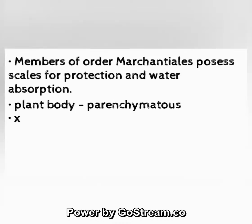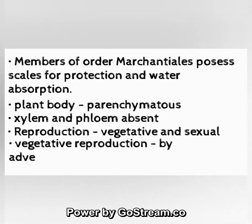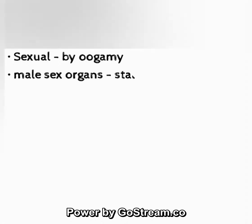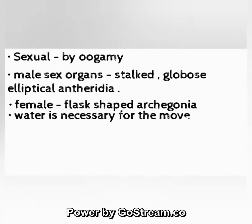Plant body is parenchymatous; xylem and phloem are absent. Reproduction is vegetative and sexual. Vegetative reproduction occurs by adventitious branches, gemmae, protonema, and tubers. Sexual reproduction: male sex organs are stalked, globose to elliptical antheridia; female sex organs are flask-shaped archegonia. Water is necessary for fertilization.